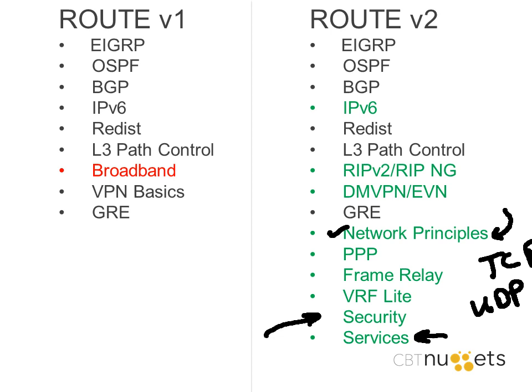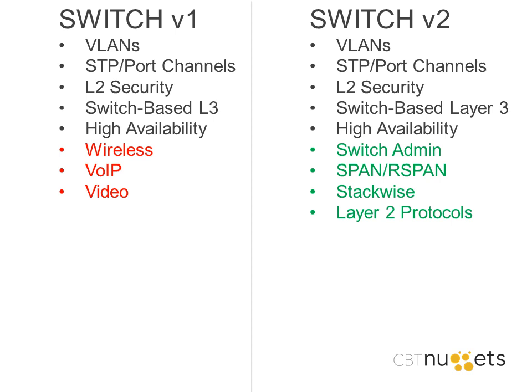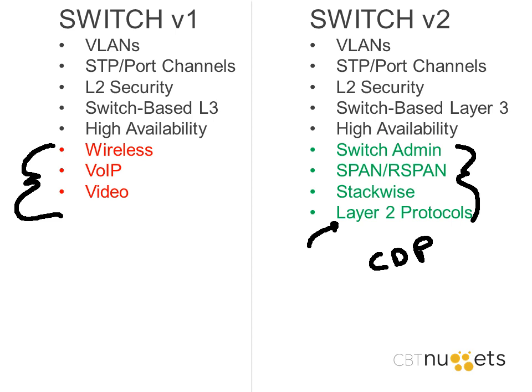Let's take a look at the biggest changes to the Switch course — and they're pretty obvious. Wireless, voice over IP, and video were inclusions in your previous version of Switch. Those exit stage left and are replaced by Switch administration — things like administrative templates, making secure shell connections to the device, SPAN and RSPAN for monitoring, StackWise — one of many technologies we can use to eliminate spanning tree protocol between multiple physical devices — and then some Layer 2 protocols like CDP, which makes a comeback from the ICND materials, and related things like VTP and how to maintain and monitor those particular Layer 2 protocols.